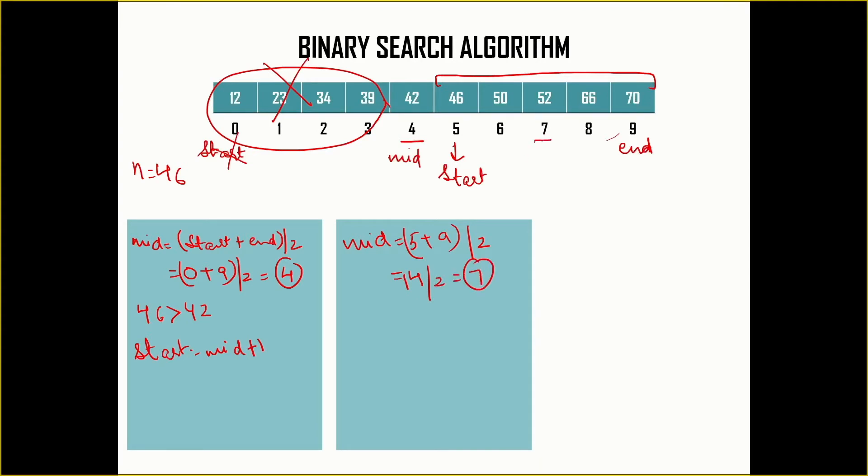So this is now the middle point. The number is available on the left hand side of the list, so we are going to search it here. That means we will be discarding the right side of the list. My element 46 is now less than the element available at middle position which is 52.